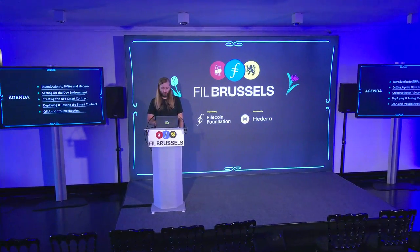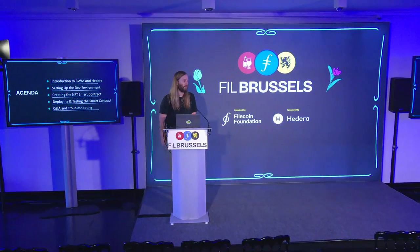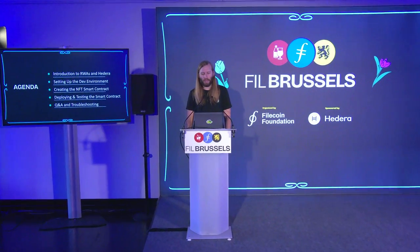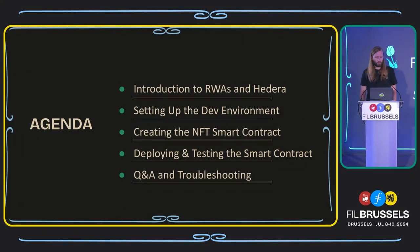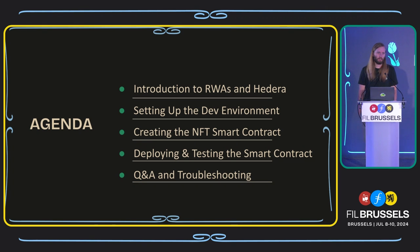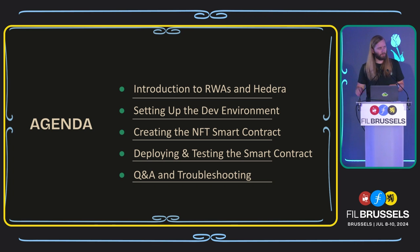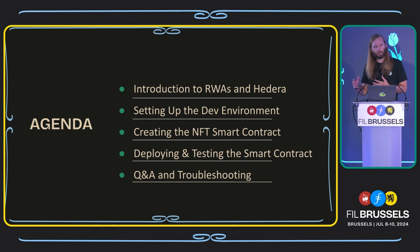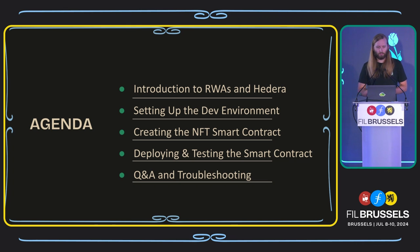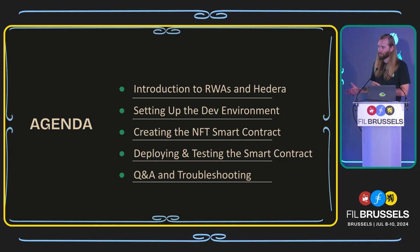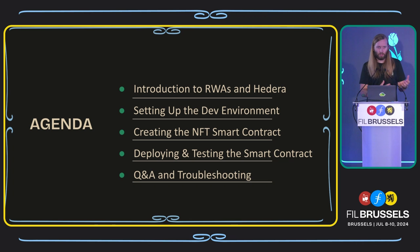Today we are going to be going over RWAs. It is a very big asset class and a lot of people are talking about it. We're going to do a little bit of a history on what RWAs are, a little intro into Hedera, and then we're going to do hands-on development of deploying a smart contract that can mint NFTs on the Hedera token service. This is a basic version of how you could tokenize real-world assets utilizing both EVM technology, Solidity contracts, and the Hedera token service.